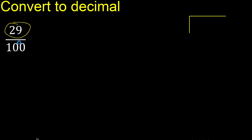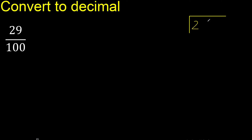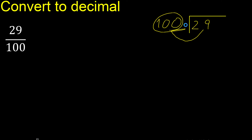29 divided by 100. 29 is less than 100, therefore complete, always complete with 0.